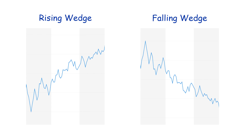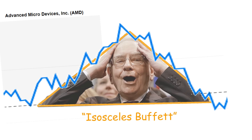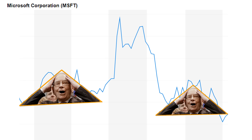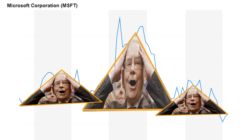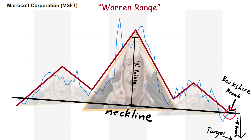These are the two most fundamental patterns, and by combining them you can get pretty much every other pattern. You'll often see a rising and then falling wedge in sequence, which creates a triangular shape traders call the isosceles buffet. If you see two adjacent isosceles buffets with the big buffet in the middle, we have what's called a warren range. You want to trade on the neckline right where the Berkshire breaks — measure the distance between the hairline and the neckline, enter short where the neckline meets the descending slope with an equal point target, placing the stop loss just above the point of highest resistance to the right of the warren range. Should just be easy money, really.